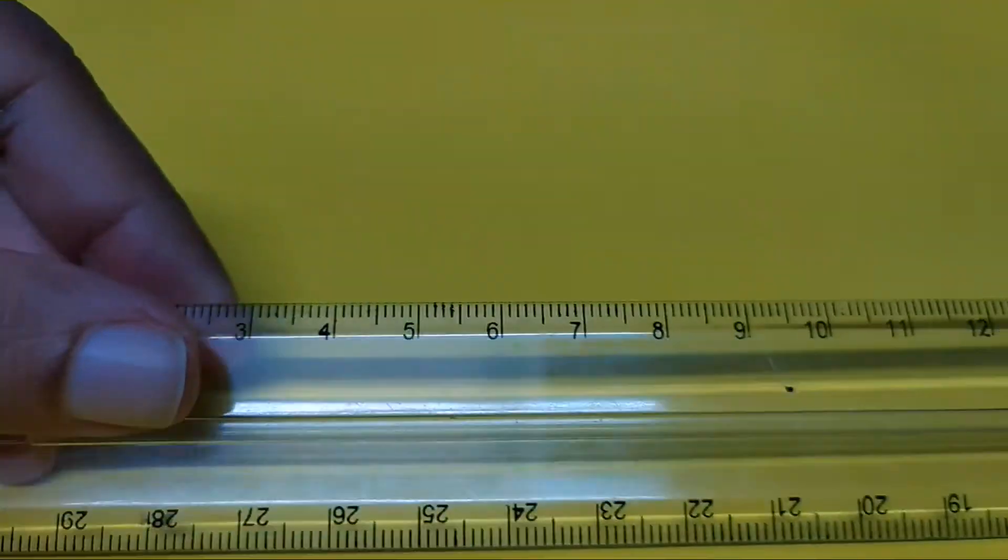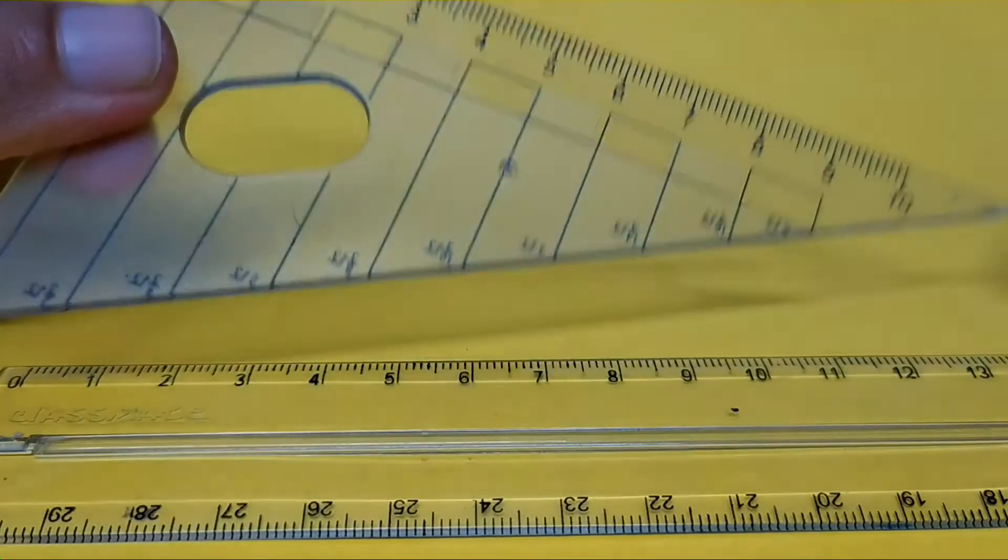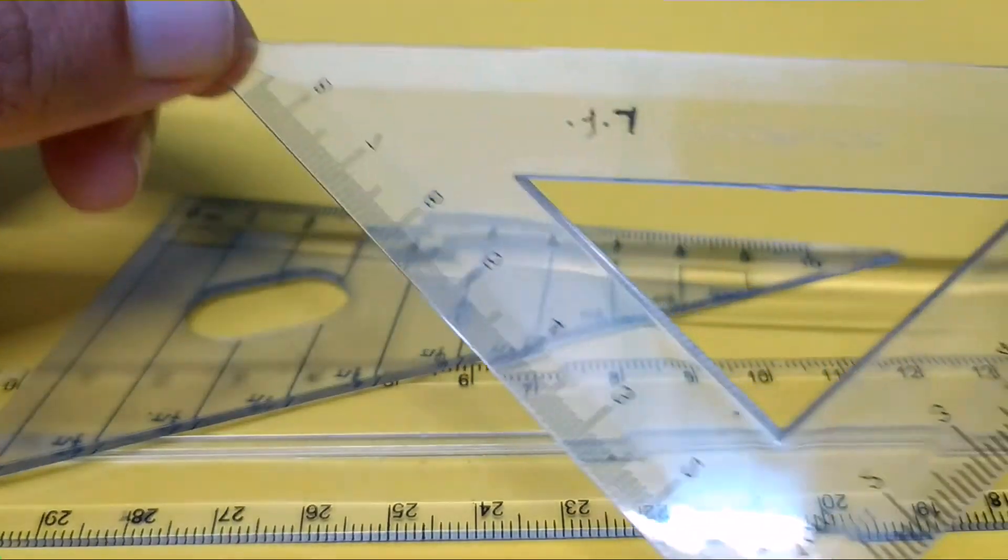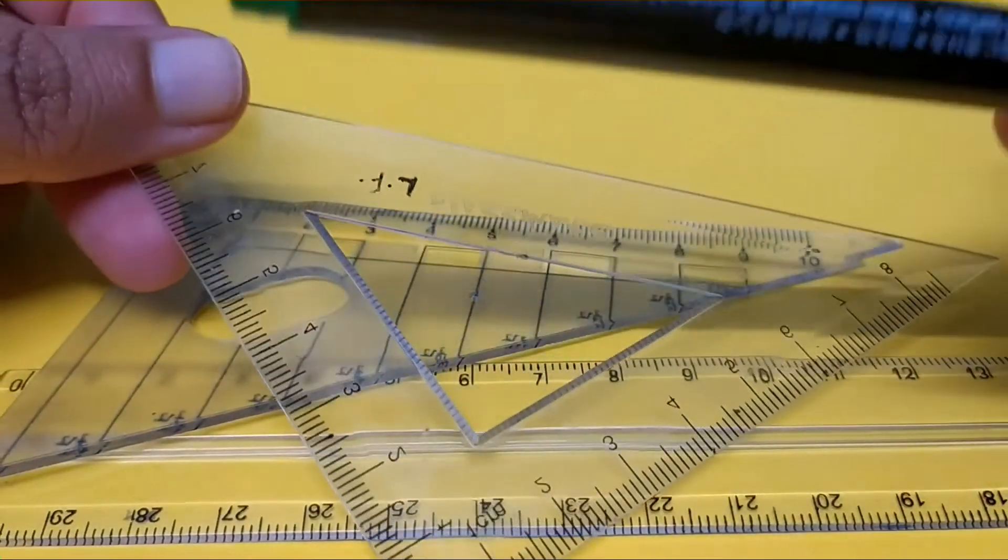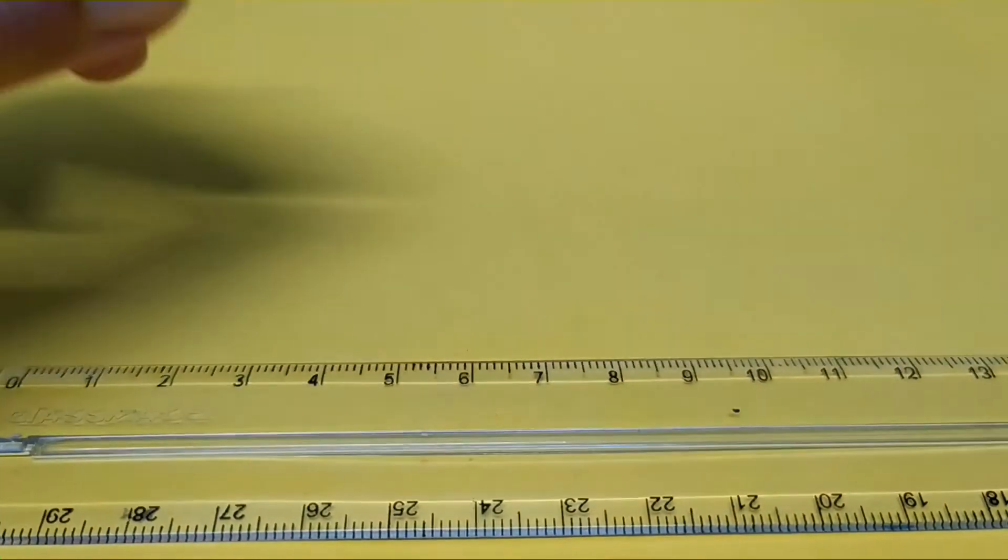Today we're going to draw two parallel lines using set square geometrical instruments. We're going to use a scale, a 30-60-90 set square (that's the longer edged one), a 45-45-90 degree set square, and a pencil. I'm going to use a marker.